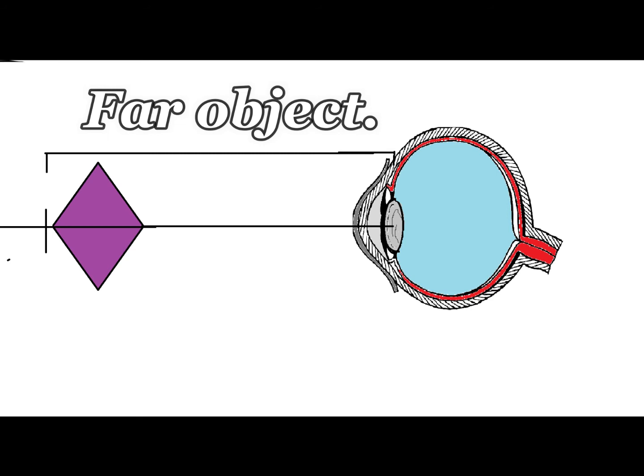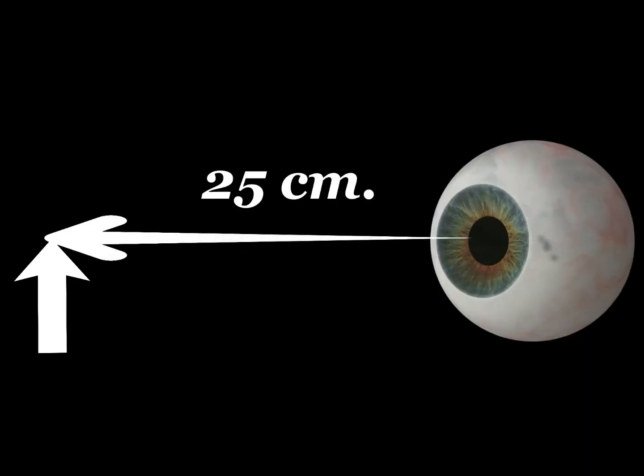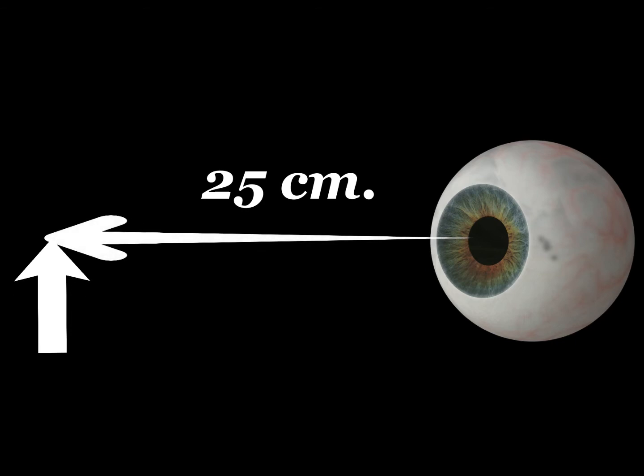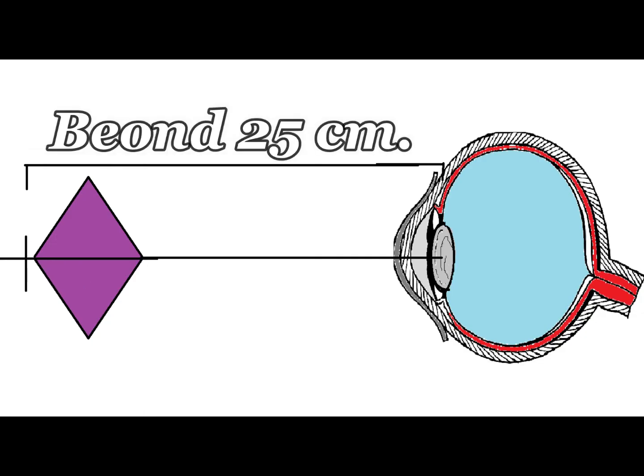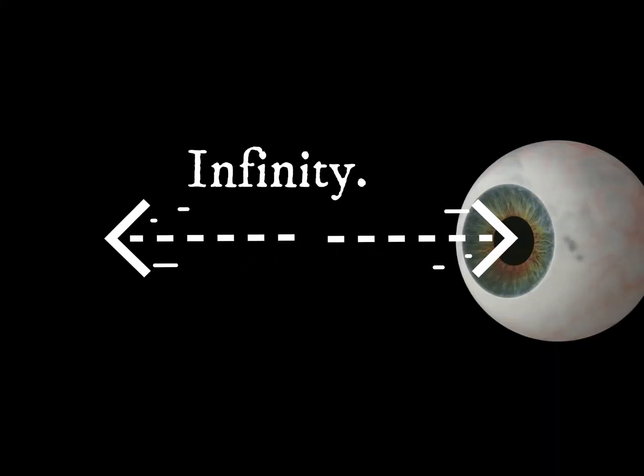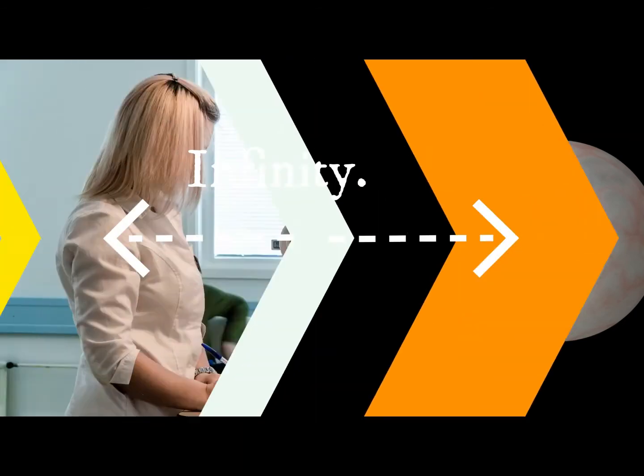What is the nearest minimum point till which we can see? It is 25 centimeters in a normal eye. In a normal eye, anything plus 25 centimeters away from our eye we can see. If it is before 25 centimeters, we will see it blurred. What is the maximum point? It is infinity.